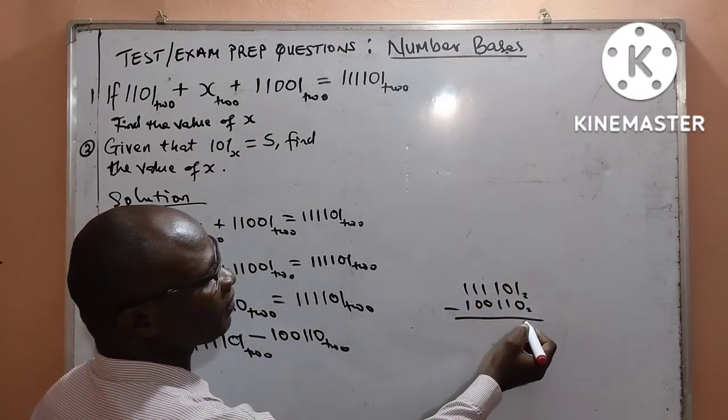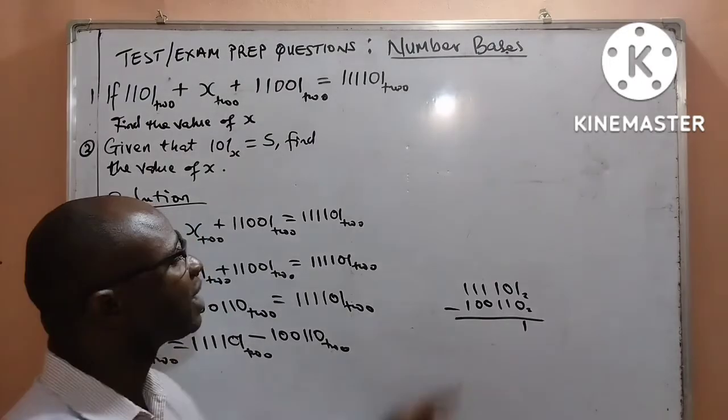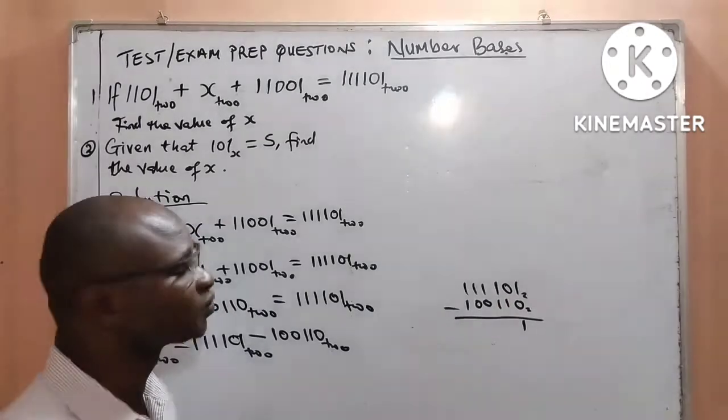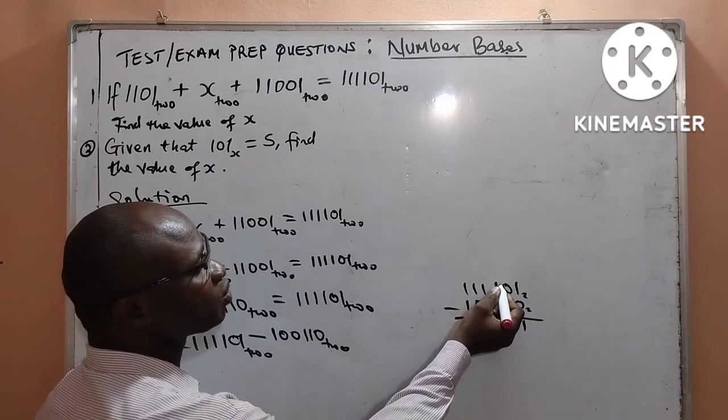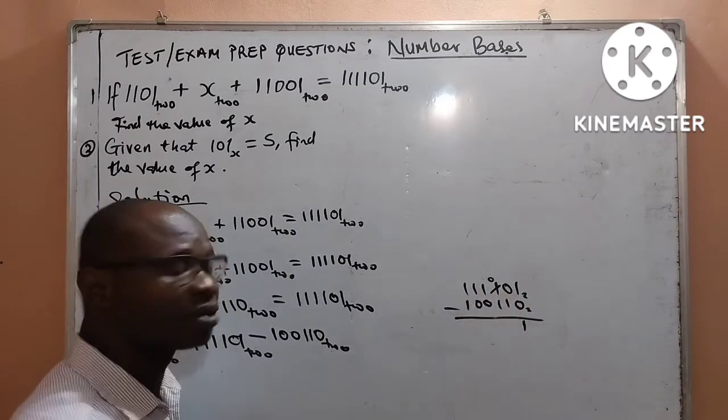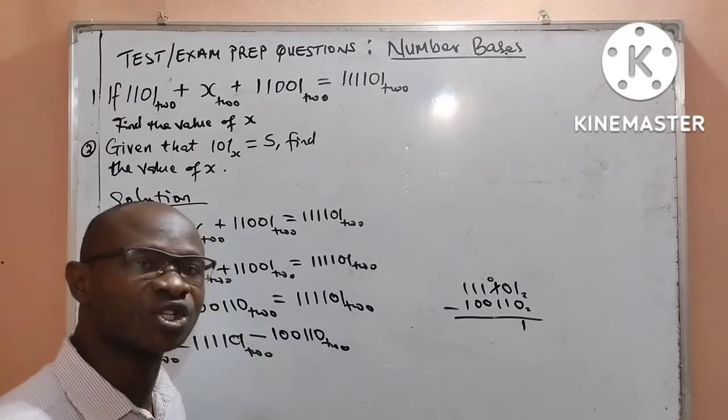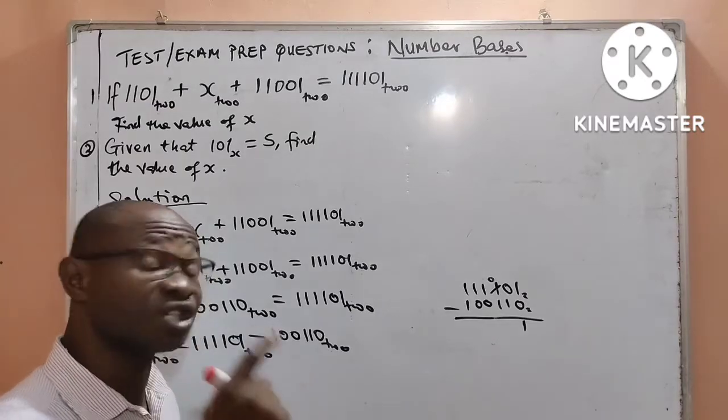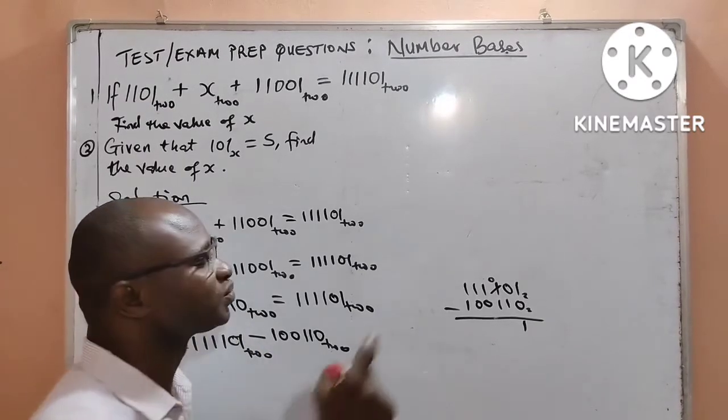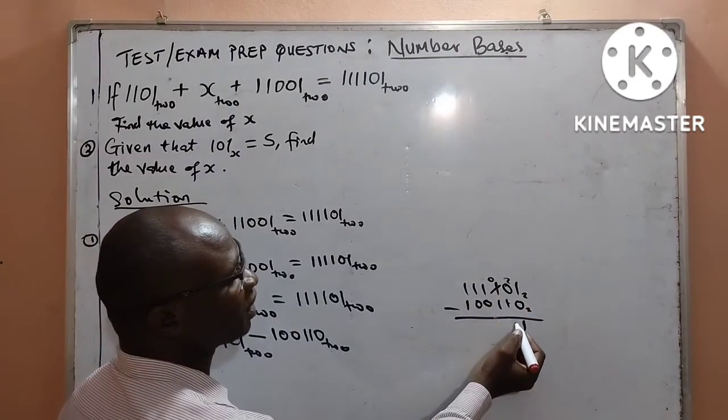I cannot do 0 minus 1. I will come to this one and borrow it. It will remain 0. But what I have borrowed is not 1. I have actually borrowed 2 because for every digit number I borrow, it is base 2. It is 2 because it is in base 2. Therefore, I will now write 2 here. 2 minus 1 will give me 1.